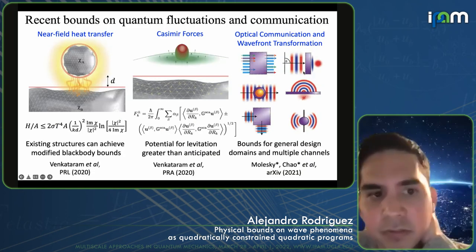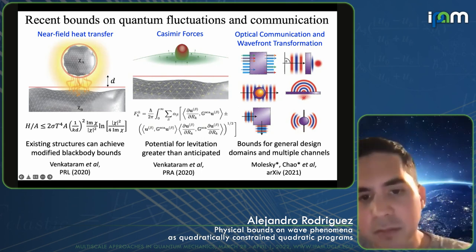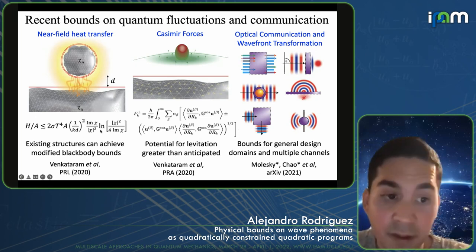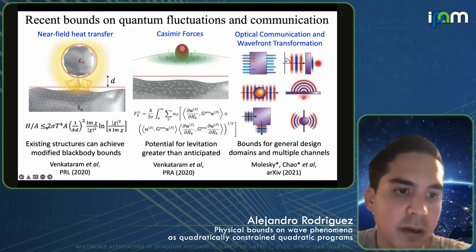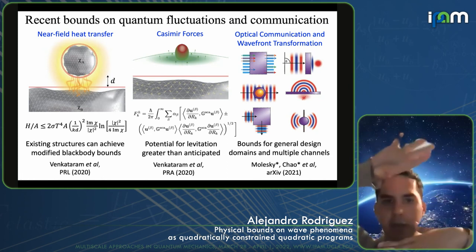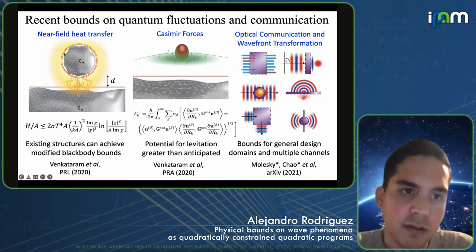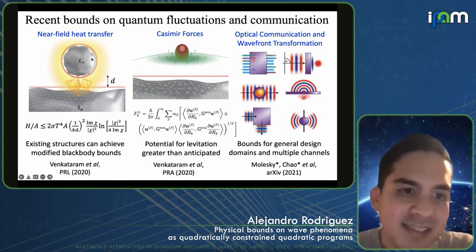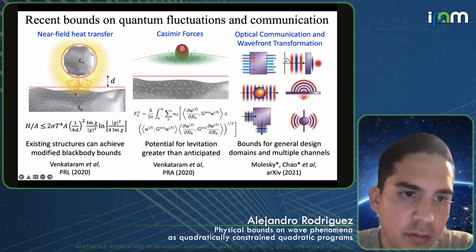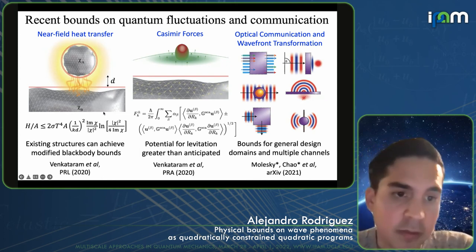We applied these techniques to this problem. What's really surprising is that they give you semi-analytical and analytical insight. We found a modification to the black body formula that incorporates the distance between the two objects — you only need to assume there's a separating plane between the hot and cold objects. You can show it scales like 1/D², and you can show dependence on the material: a logarithmic dependence on the susceptibility.